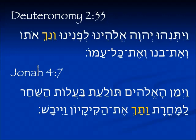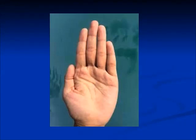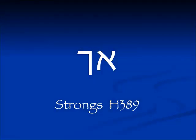In Jonah 4:7 we have a third-person feminine singular: v'yaman ha-elohim tolaat ba'alot ha-shachar lemacharat v'tach et hakikayon v'yivash. The tolaat — the worm — is smiting the vine under which Jonah is sitting. So we have the Vav for reversing vav, the Tav for 'she will do something' because tolaat is feminine, and all we see is the Kaf for 'smite.' Interestingly, the letter Kaf is based on the open palm of the hand with which you might smite somebody.